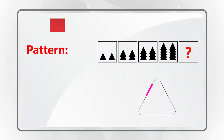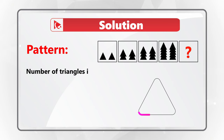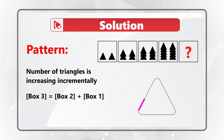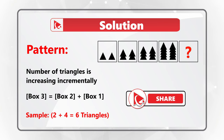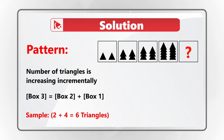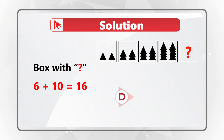To get the correct answer, look for patterns. Each box contains triangles that are incrementally increasing. To calculate the triangles in the next box, sum the triangles from the previous two boxes. For example, square three: 2 plus 4 equals 6. For the last box: 6 plus 10 equals 16 triangles. So the correct answer is choice D, 16 triangles.